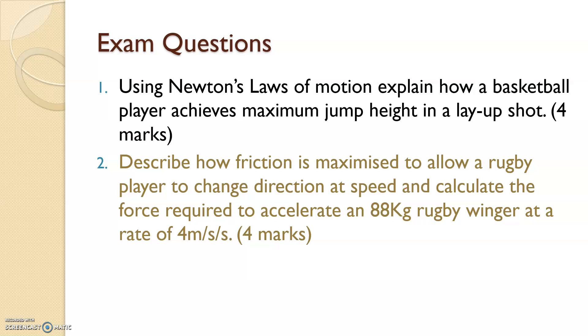Newton's laws of motion. Explain how a basketball player achieves maximum jump height in a layup shot. And the second question is: Describe how friction is maximized to allow a rugby player to change direction and speed. And calculate the force required to accelerate an 88kg rugby player winger at a rate of 4 meters per second squared.